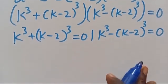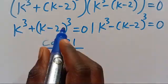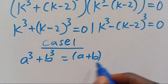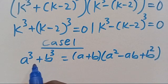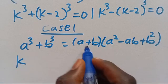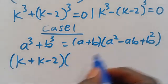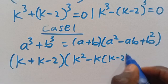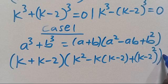Let's pick them one after the other. Case 1: we have A to the power of 3 plus B to the power of 3, which always equals A plus B in parentheses multiplied by A squared minus AB plus B squared. Here our A equals K and our B equals K minus 2. Applying this, we have K plus K minus 2 in parentheses, multiplied by K squared minus K times K minus 2 plus K minus 2 in parentheses to the power of 2, all set equal to 0.